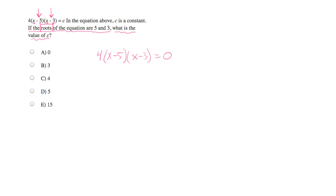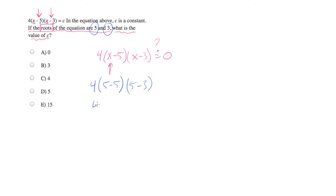What we need to check here is: if I plug in 5 and 3, are those in fact roots of this equation? So let's try plugging them in. If I plug in 5 for x, we get 4 times 5 minus 5, times 5 minus 3 — or 4 times 0 times 2, which is equal to 0. So is 5 a root? Yes.